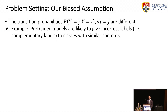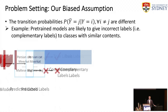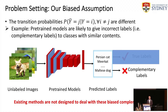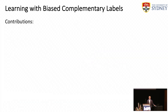But in many cases, the transition probabilities are likely to be different. For example, if we assign complementary labels using a pre-trained model, the model is likely to give incorrect labels to classes with similar content — that is, the complementary labels are biased. But existing methods are not designed to deal with biased complementary labels, where the transition probabilities are different. This motivates our method to learn with biased complementary labels.